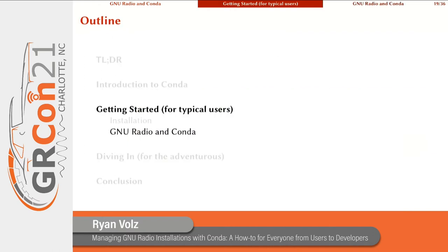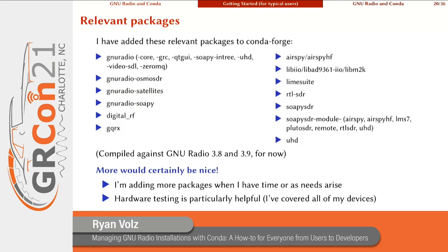So what about GNU Radio in particular? These are all the packages I've added so far to conda-forge. That includes GNU Radio, which I broke up into a few component pieces so you don't have to install all dependencies at once. There are also some out-of-tree packages: GNU Radio Osmo SDR, Satellites, and GNU Radio SOPI before it came in-tree. Then there's DigitalRF — the package I maintain for MIT Haystack Observatory for recording and storing data — plus GQRX for exploring the spectrum, and a bunch of packages for hardware support including AirSpy devices, LibIIO and the Pluto device, LimeSuite for LimeSDR, RTL-SDR, USRP UHD devices, and the SOPI modules that support all of those.